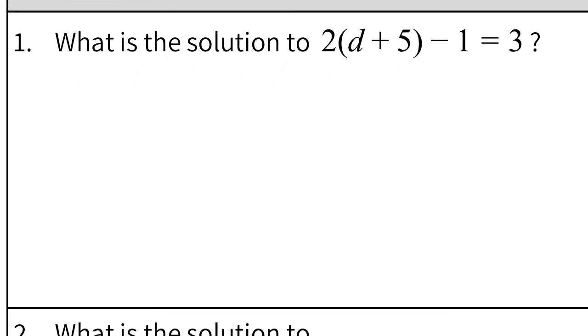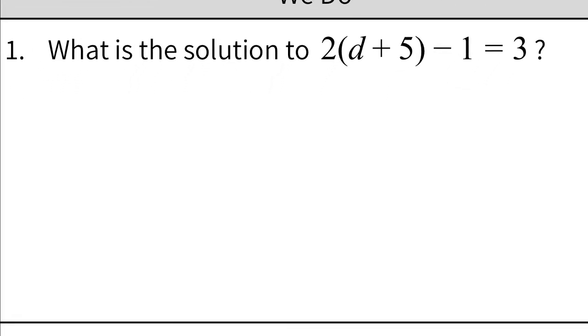So let's get started with the first one. It asks what is the solution to that equation. So if they're asking for the solution they want us to solve for D, which means that D needs to be all by itself. So I would start by distributing the 2 outside the parentheses. That gives me 2D plus 10. Then I still have minus 1 but it wasn't in the parentheses so we're just gonna bring it down. Equals 3.